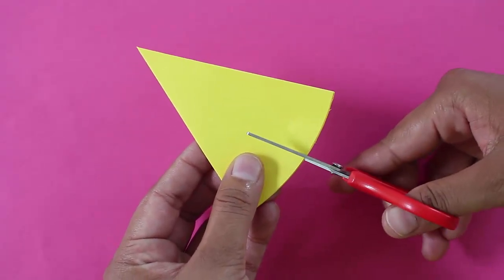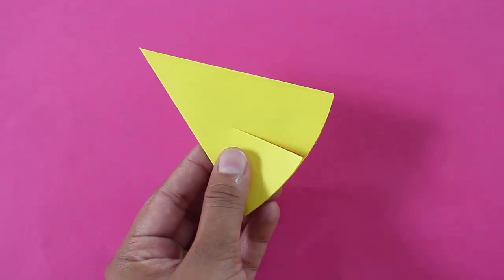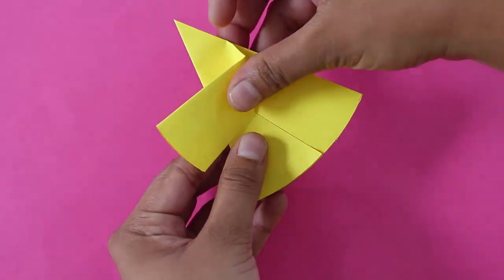Now there will be two edges - one is closed, the other is open. Cut a line parallel to the open edge.